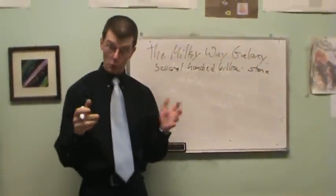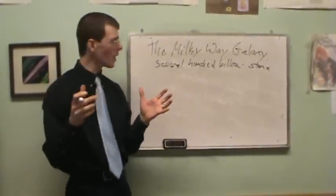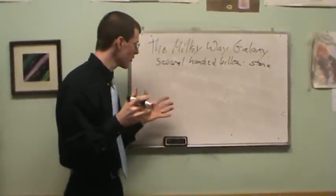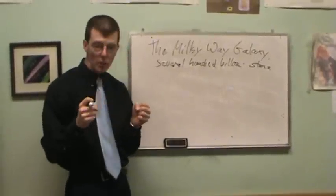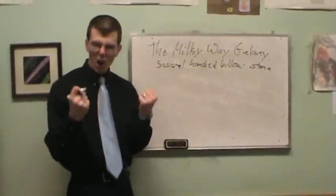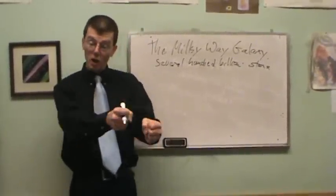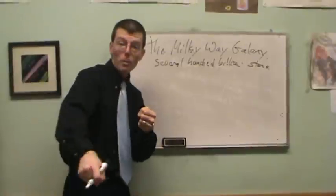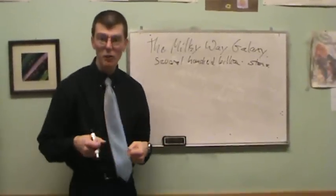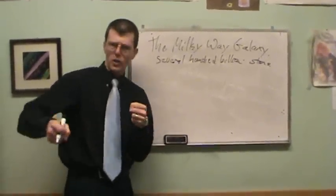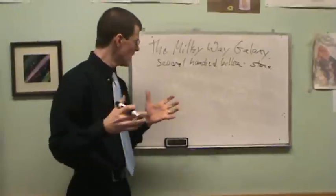It took astronomers a while to map this out and figure out exactly where we were. We have several hundred billion stars in our Milky Way galaxy, all held together, all orbiting around each other. Our Sun orbits around our Milky Way galaxy about every 200 million years, carrying the solar system with it.